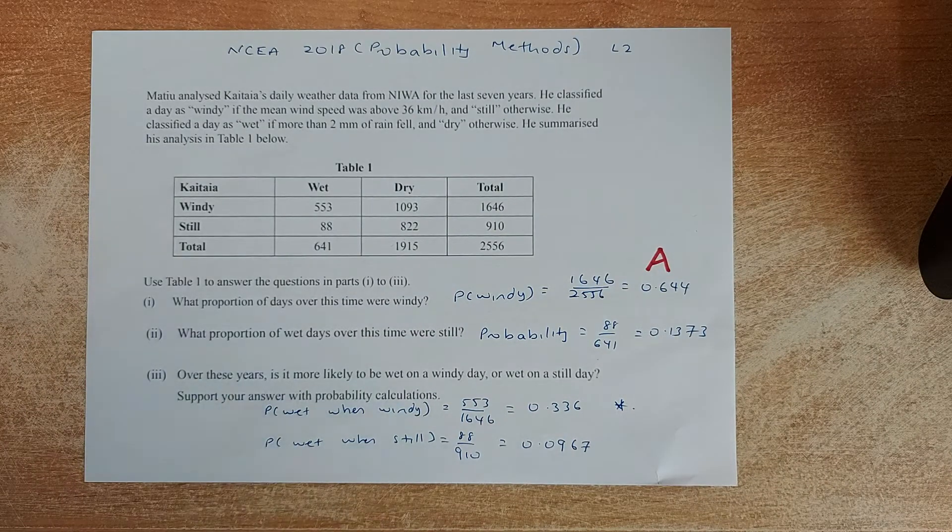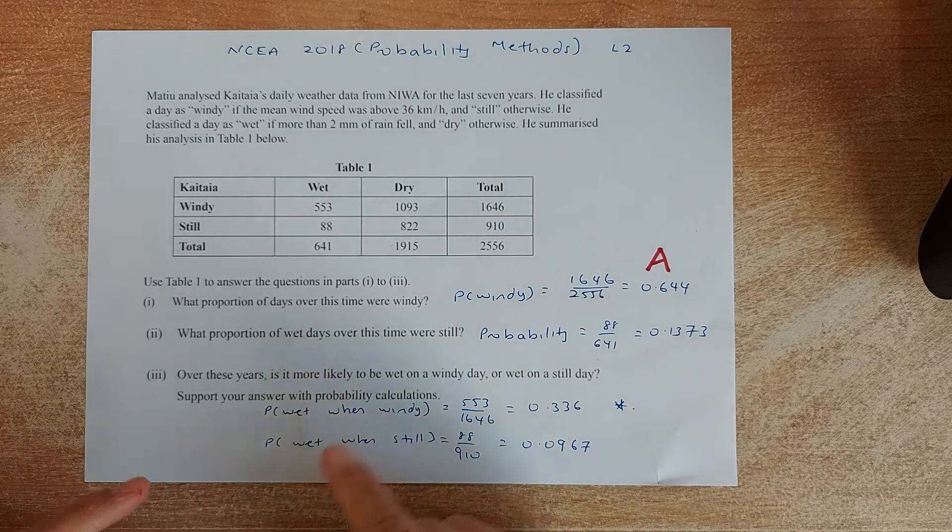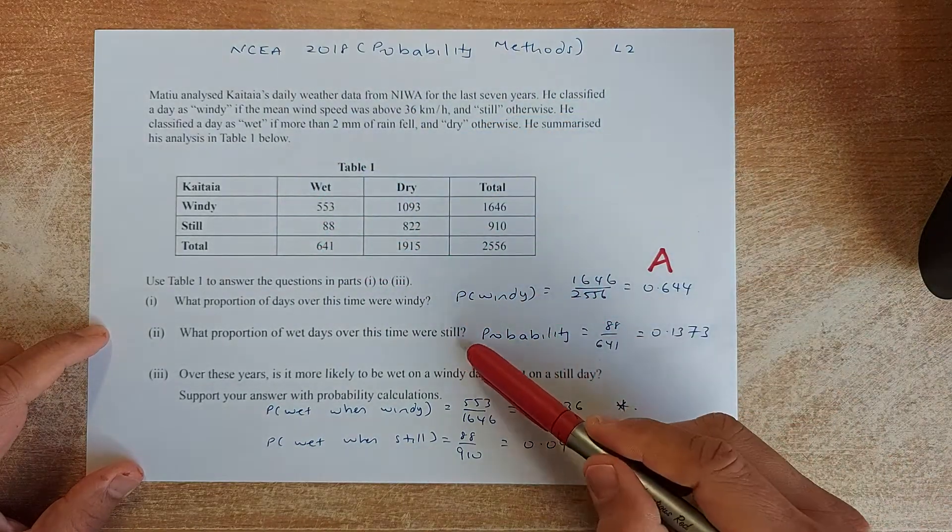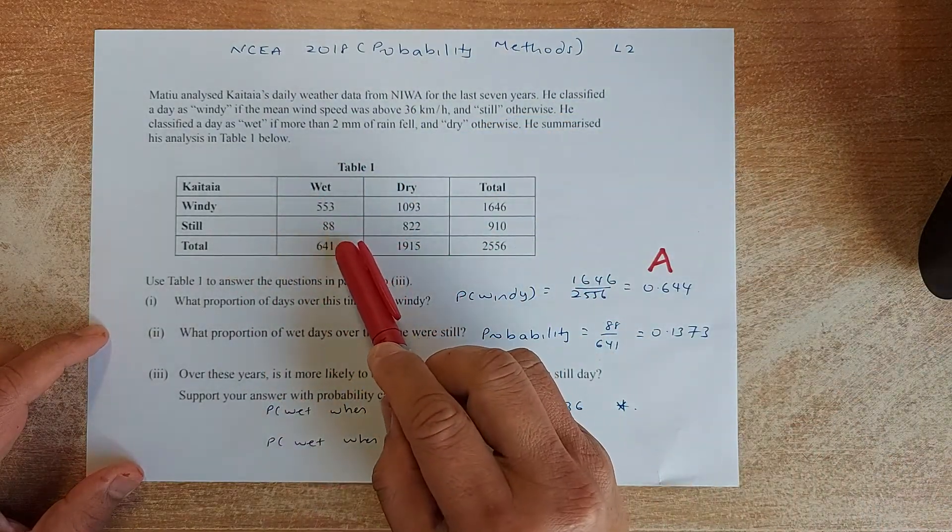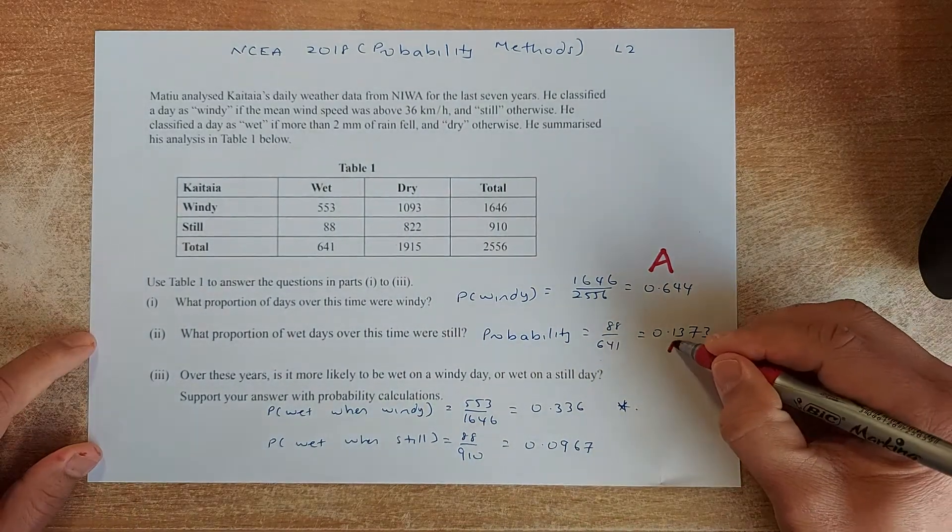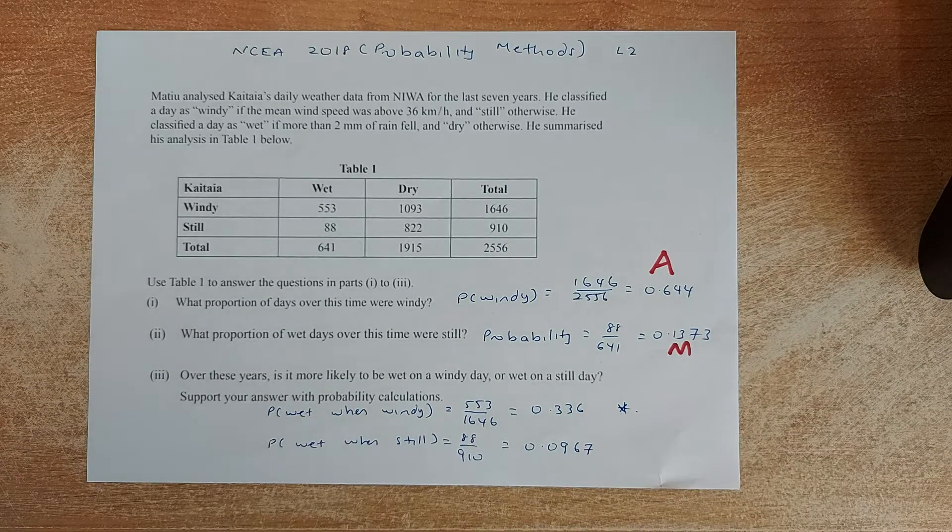Next one. What proportion of the wet days over time were still? What proportion of the wet days, so we are looking at wet days here, were still. So still, it could be 88 out of 641. So the answer is 0.1373, and that will give you a merit. Quite straightforward, isn't it?